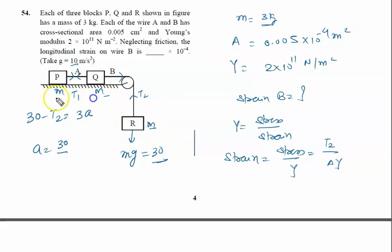Total mass M + M + M is 3M, which is 3 × 3 = 9, so acceleration is 10/3. Put this value here, we will get 30 - T2 = 3 × 10/3 = 10. So T2 is given by 30 - 10 = 20 N.